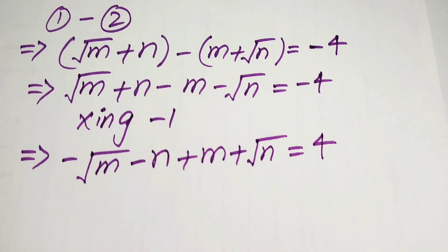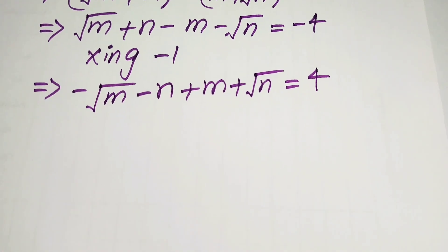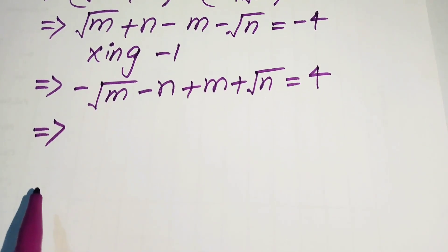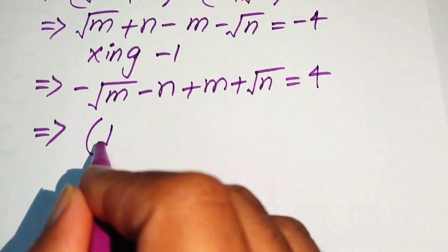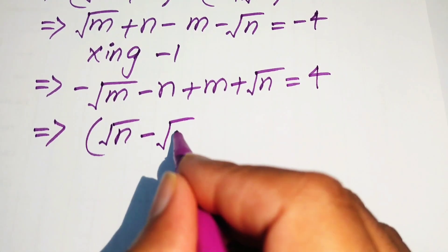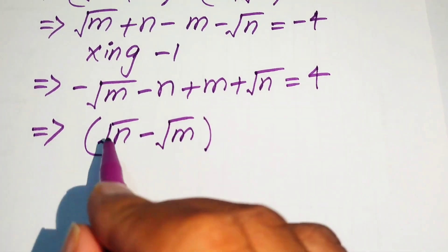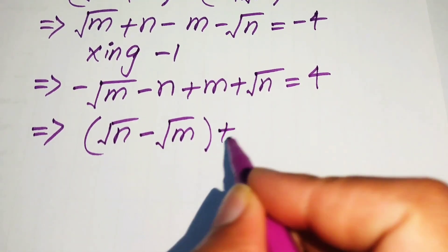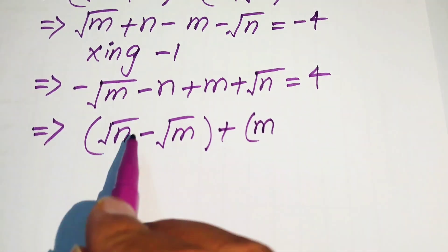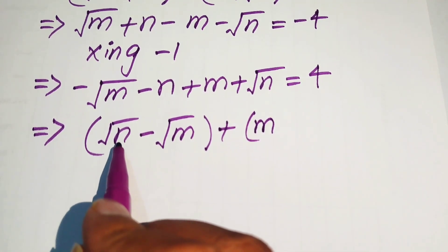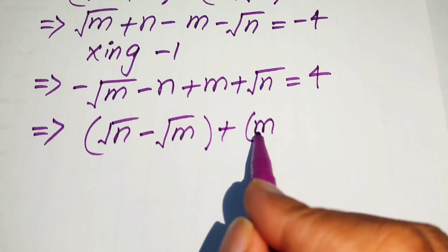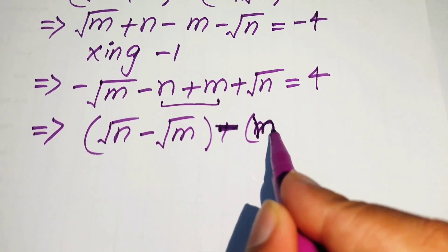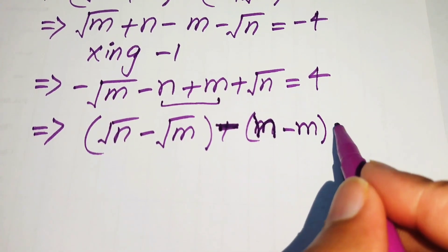We rearrange the terms, pairing the square root terms and the remaining terms. The square root terms are square root of n minus square root of m, and we take a common negative sign from the remaining terms to get n minus m, so the expression becomes: (square root of n minus square root of m) plus (n minus m) equals 4.